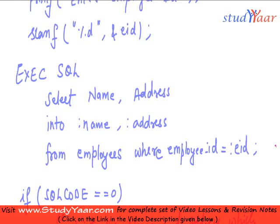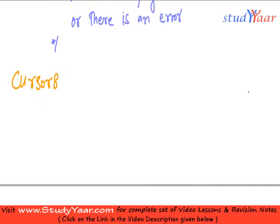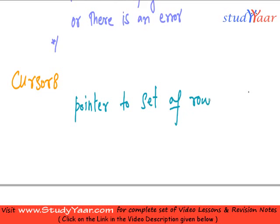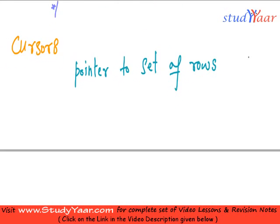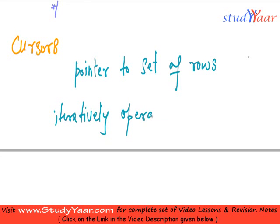In that case, we are going to use a cursor. Simply speaking, a cursor is a pointer to a set of rows — and here 'set' is not strictly a set, it could be a multi-set. The use of cursors is to iteratively operate upon each row.